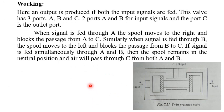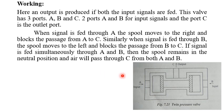The twin pressure valve has three ports: A, B, and C. A and B are the input signals; C is the outlet port. When signal is fed through A, the spool moves to the right and blocks the passage from A to C. When signal is fed through B, the spool moves left and blocks the passage from B to C. When signals are fed simultaneously through both A and B, the spool remains in the neutral position and air passes through C from both A and B.